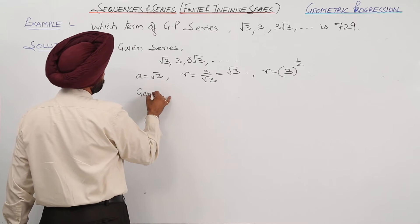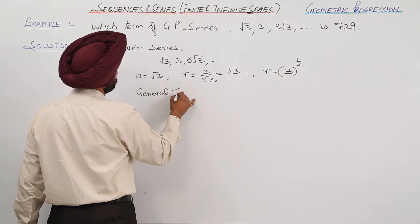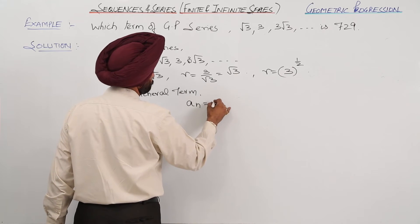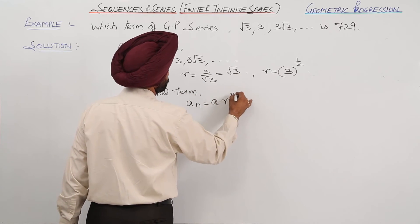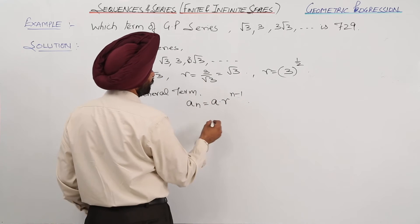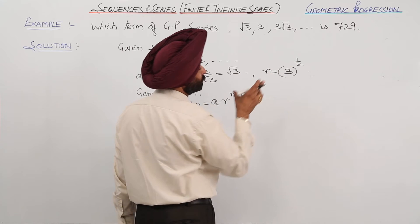The general term is a_n equals a times r raised to power n minus 1. And what we have to find? We have to find which is the 729th term.